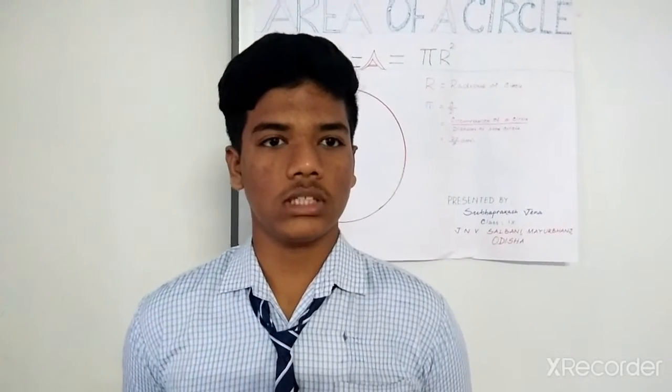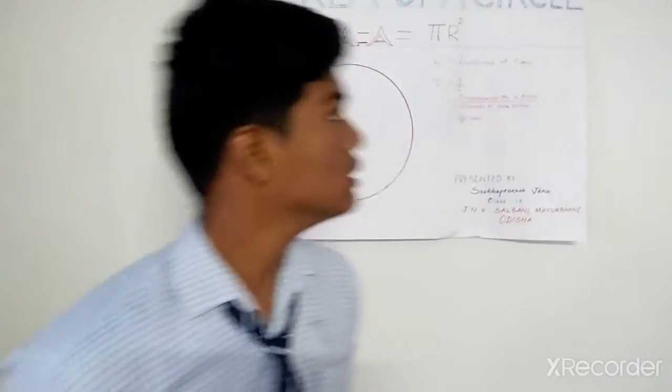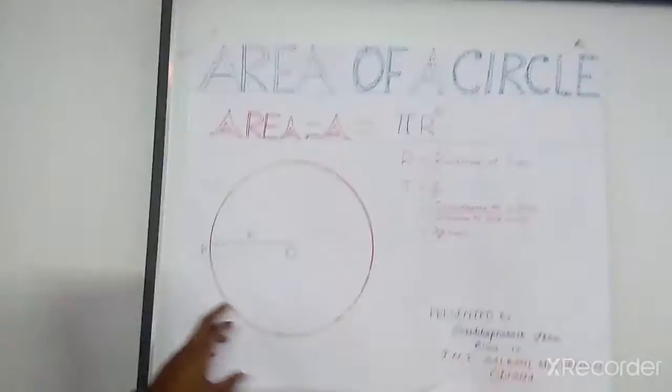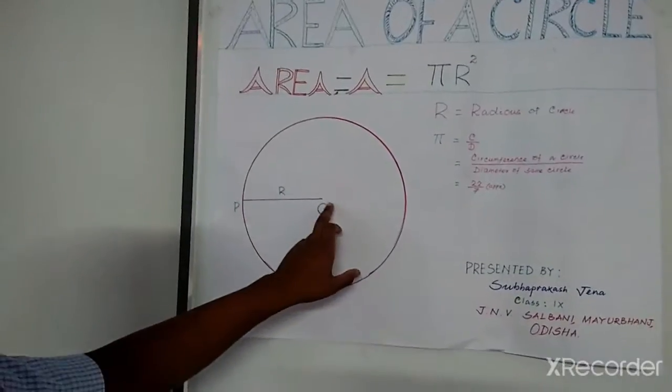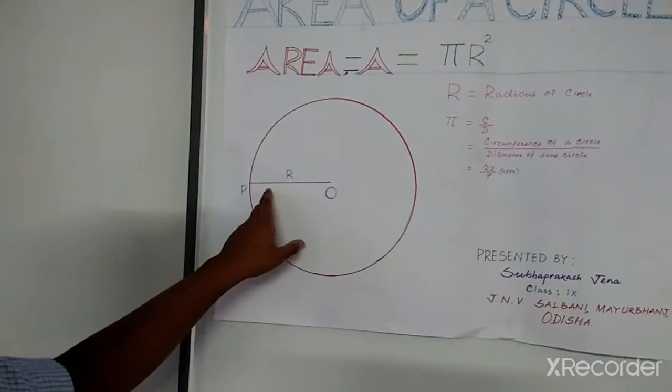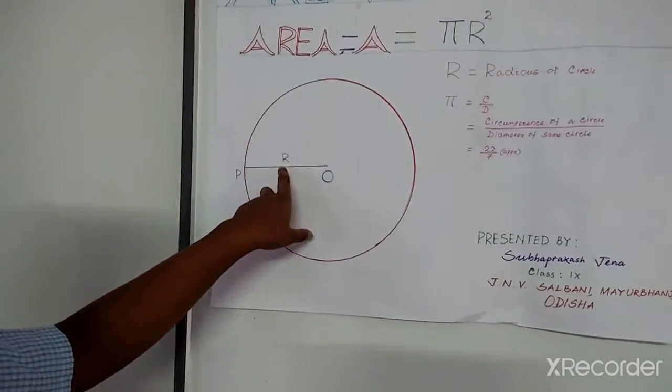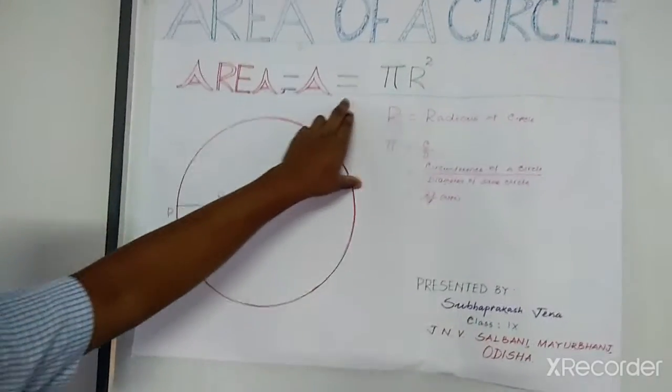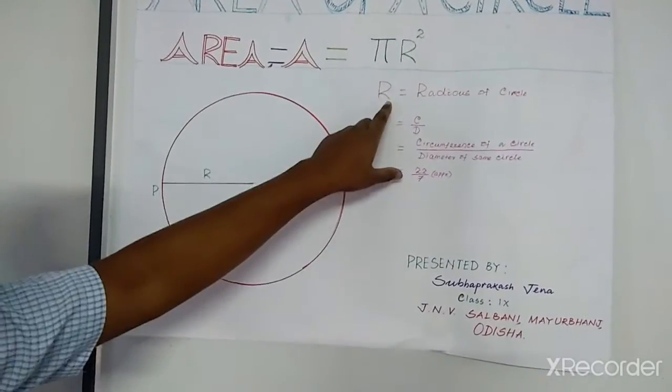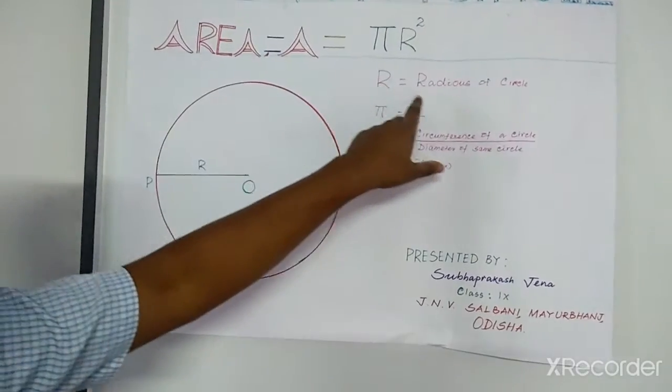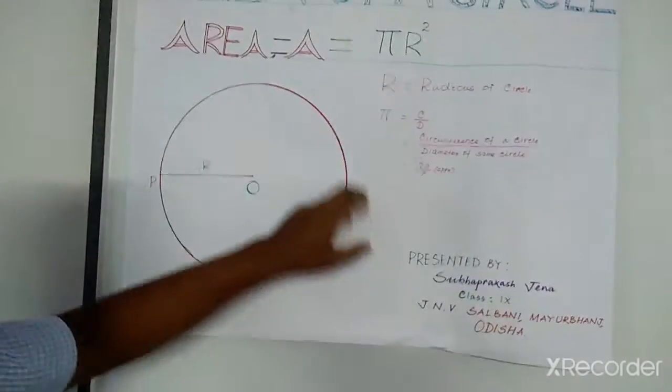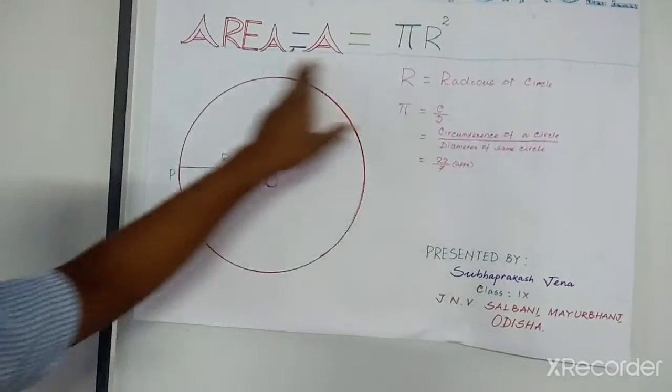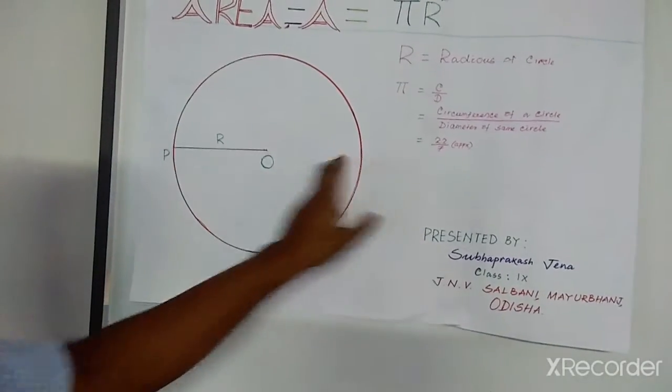Today I am doing a project on how to find area of circle. This is a circle having center O and its radius R. Then area of circle is equal to pi R square, where R is radius of circle, pi is equal to circumference divided by diameter.